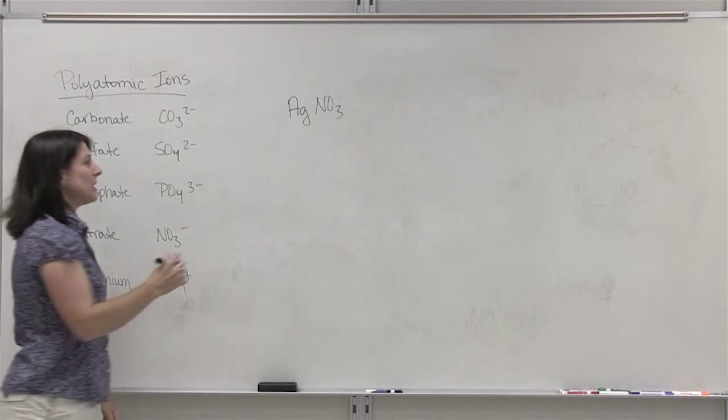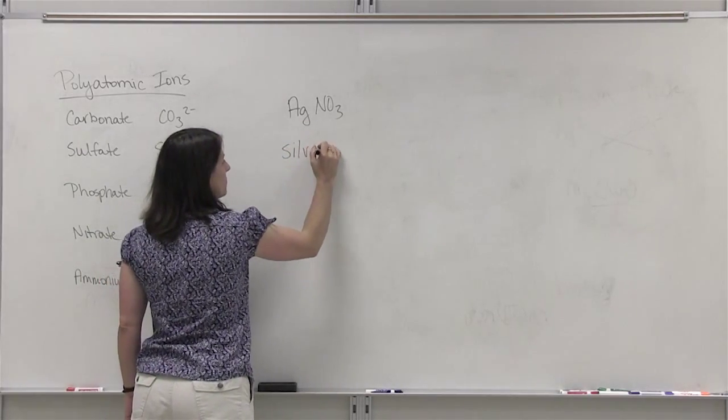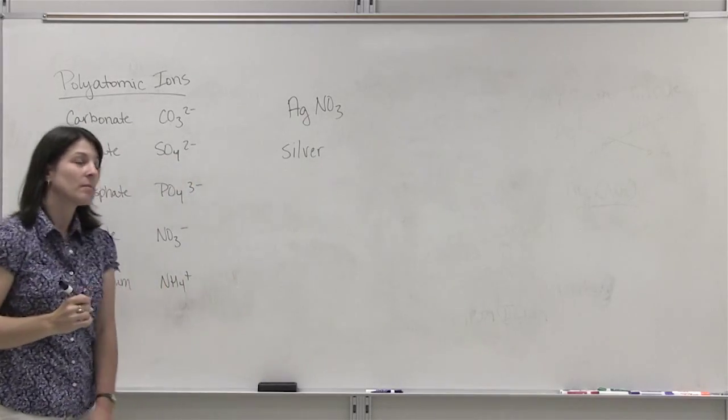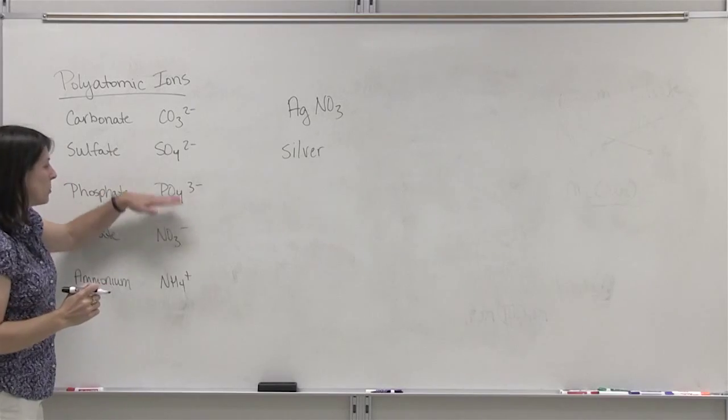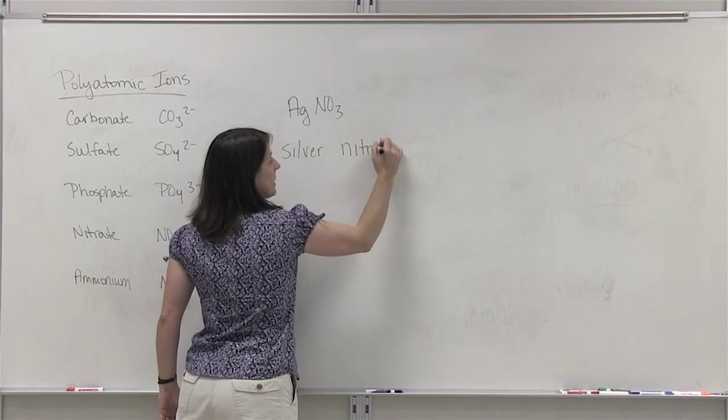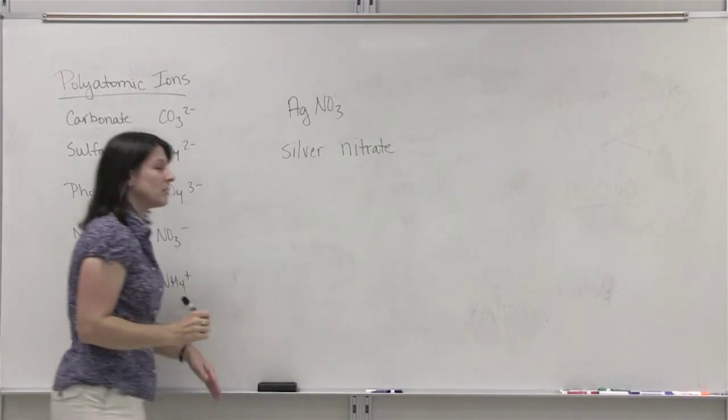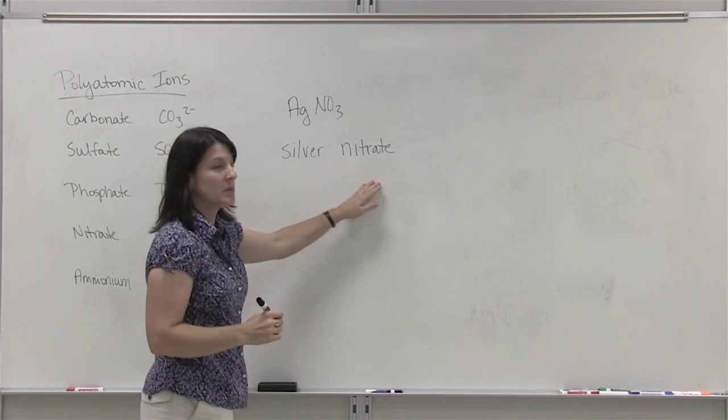AgNO3. Ag is the symbol for silver. NO3, that is a group and it is nitrate. So we use the name nitrate. We don't change any endings. This is the name that we use. So this would be silver nitrate.